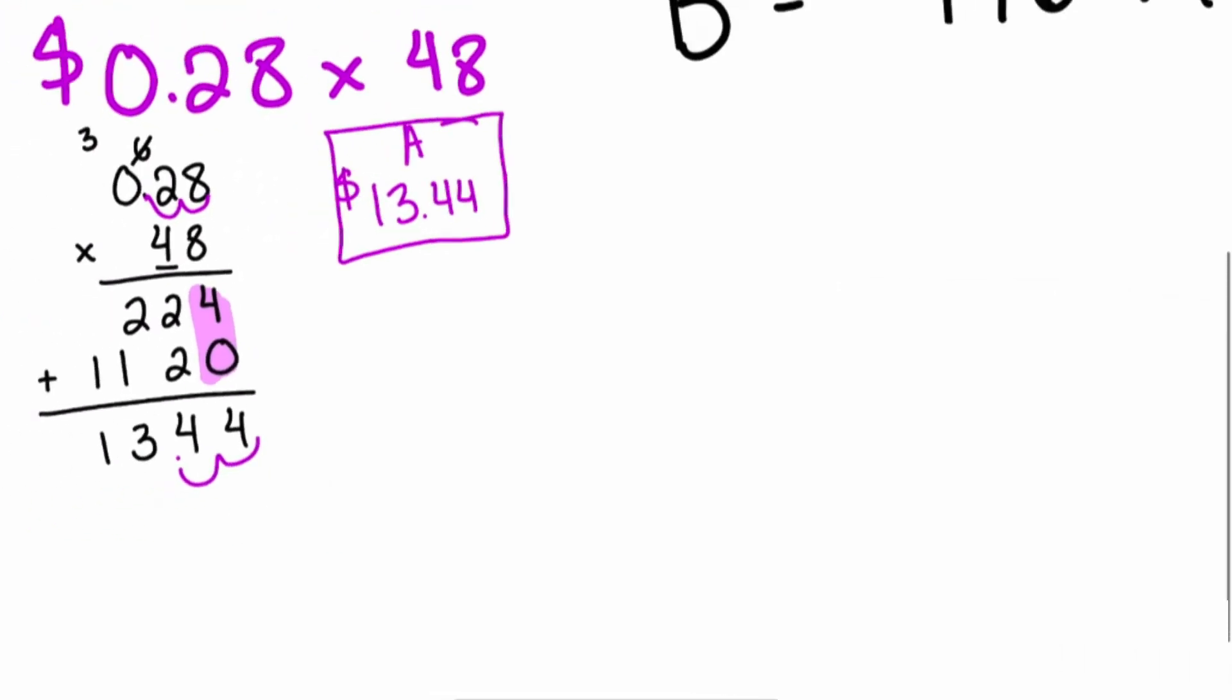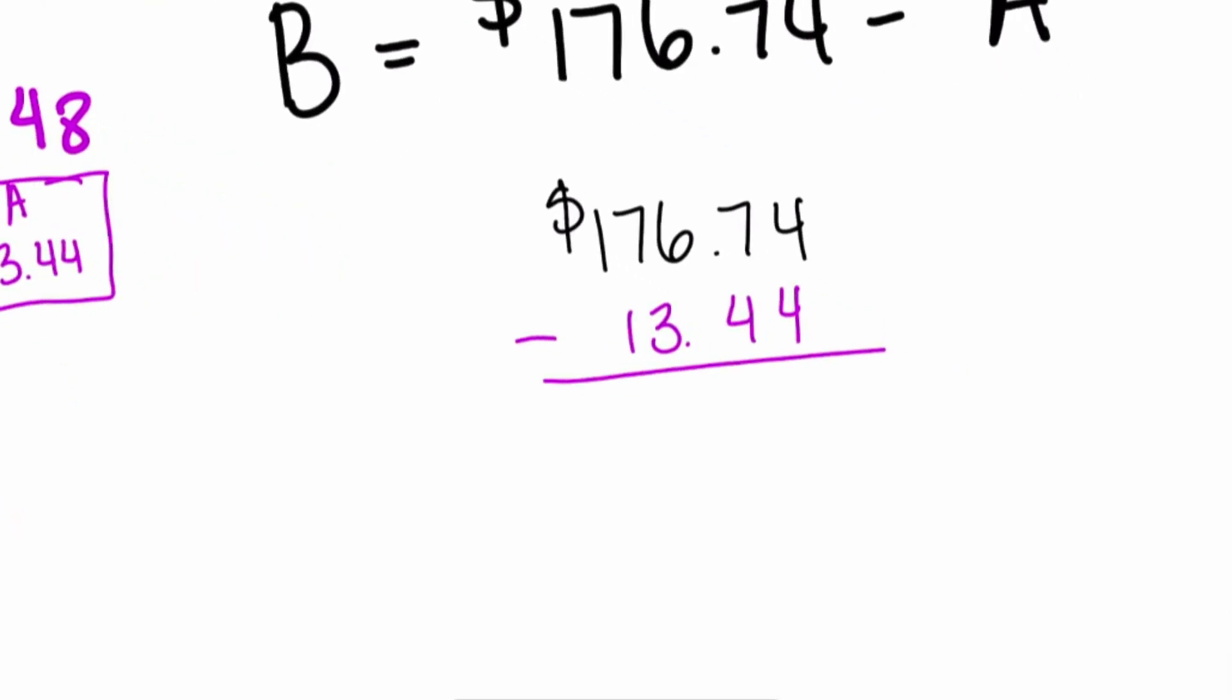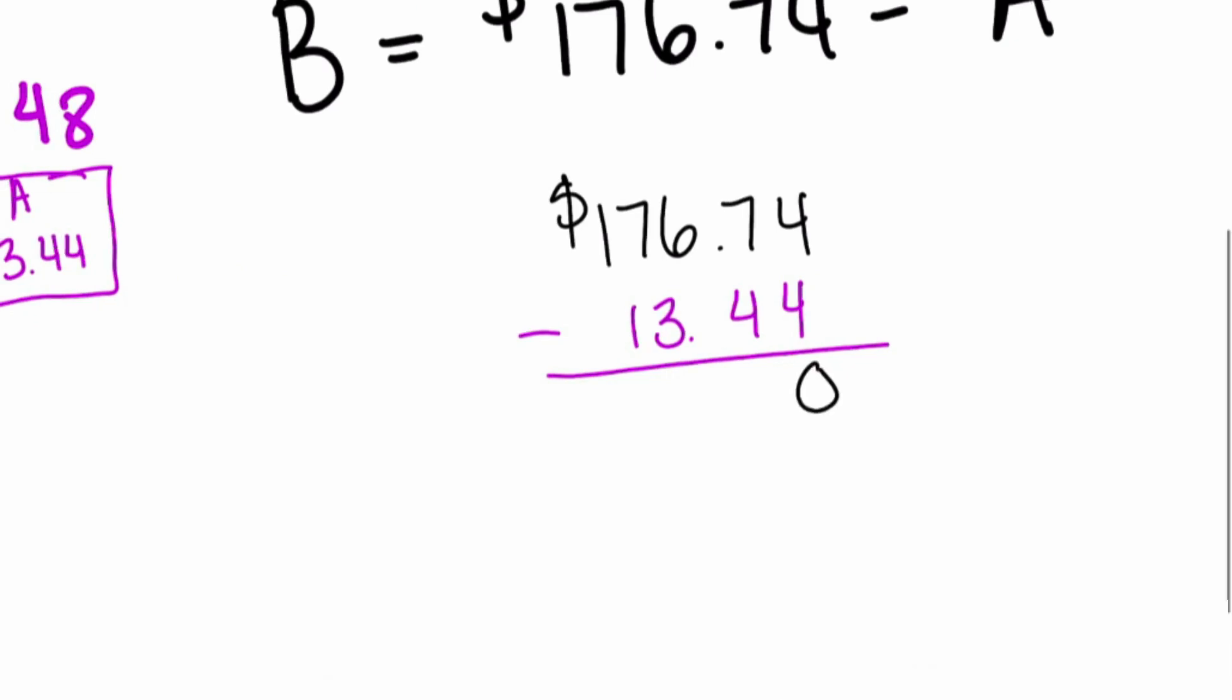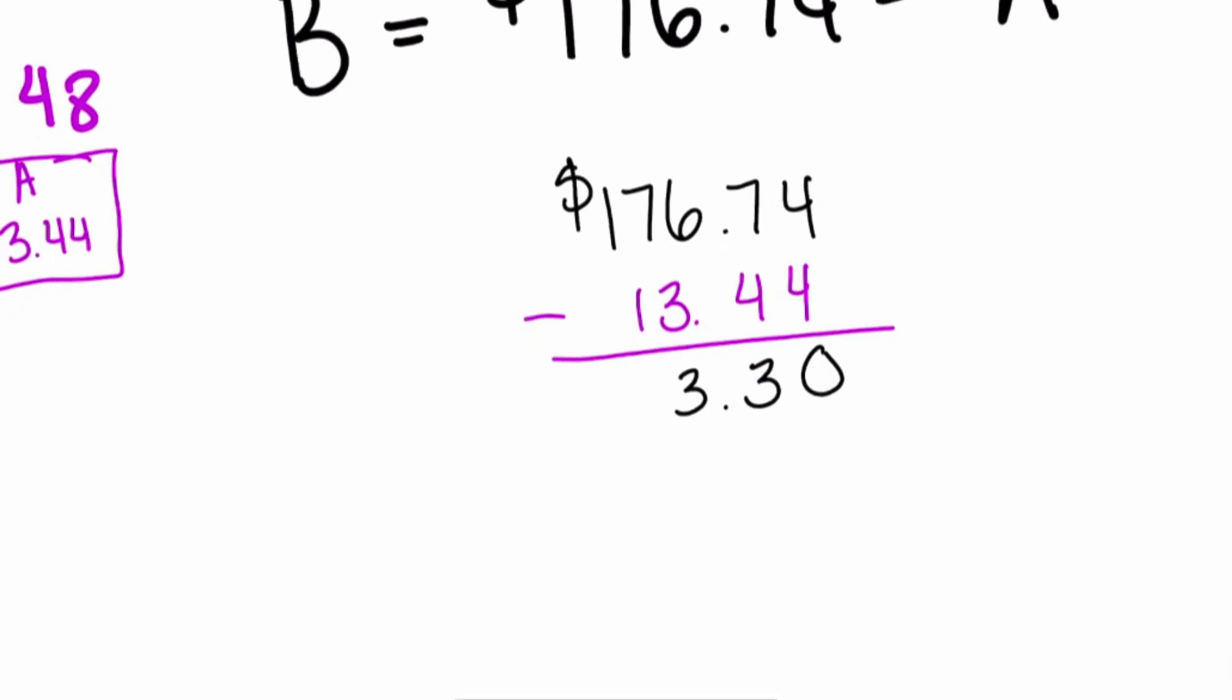What we'll do now is we'll take that cost. Like we said, we'll take the $176.74, the total cost of A and B, and we'll take away the cost of just A, and we'll be left with B. Notice how we have a 4 and 4 at the end, so when we perform the subtraction we'll get a 0 at the end. Then we have 7 minus 4, that's 3, 6 minus 3, and then if we continue, 7 minus 1 is 6, and then we have a 1.